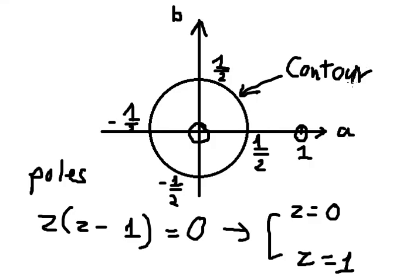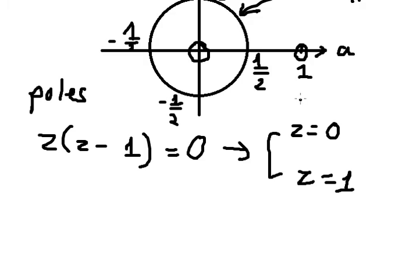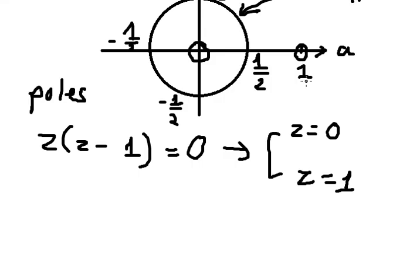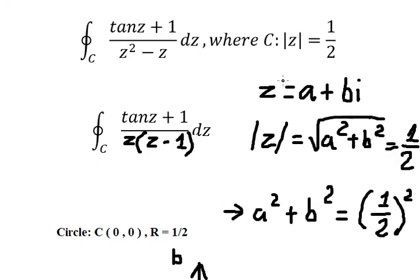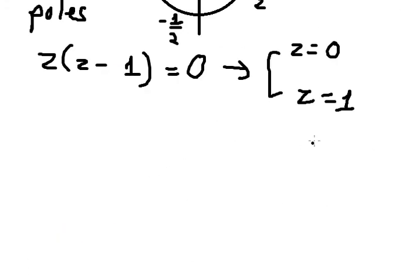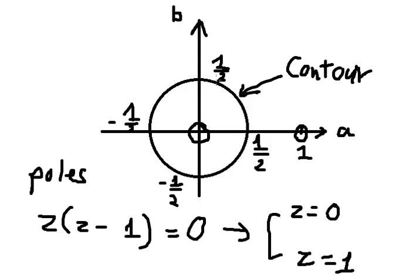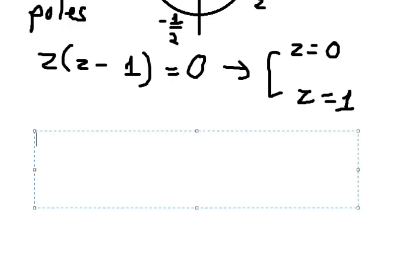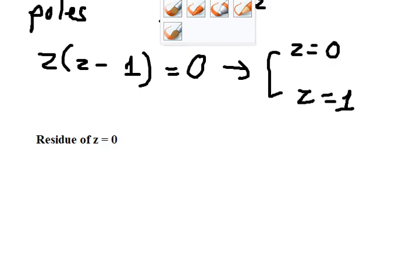In this situation, Z equals 1 is outside the contour, so it cannot contribute to this integral. We only have Z equals 0 inside the contour. So we need to find the residue at Z equals 0.